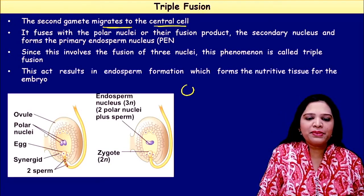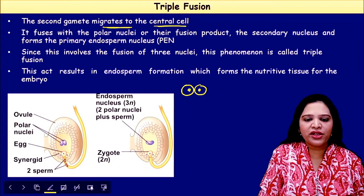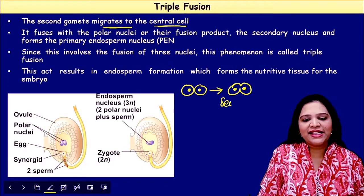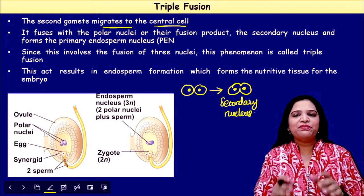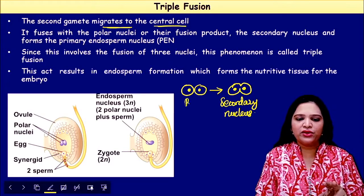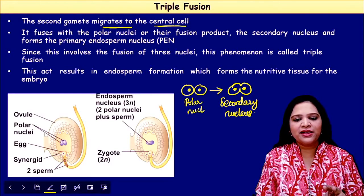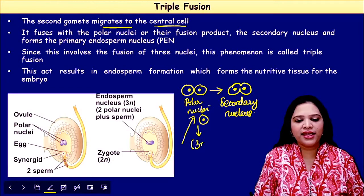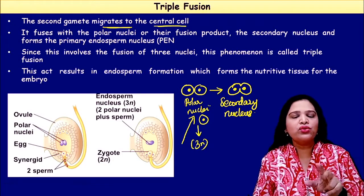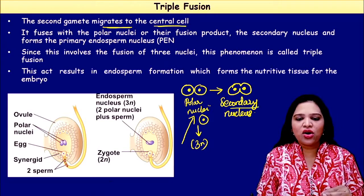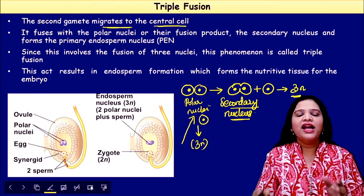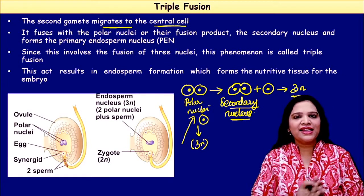In some plants, the two polar nuclei in the central cell already get fused before fertilization, forming a structure called the secondary nucleus. The upcoming male gamete then fuses with this secondary nucleus to form the 3n endosperm. This is what exactly occurs in triple fusion.